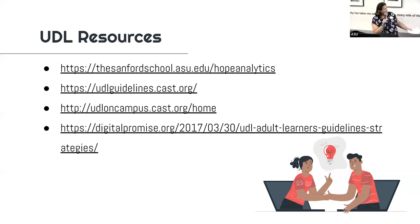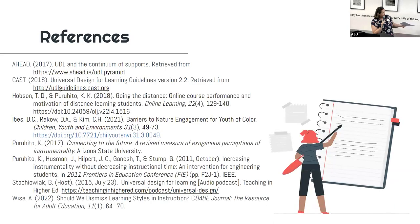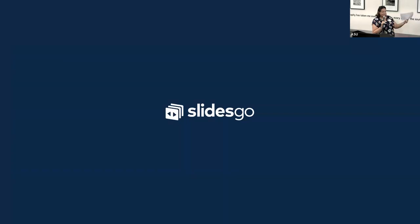Here are some resources to share: the Sanford Schools Hope Center, UDL guidelines on CAST, UDL on Campus which is specifically for college students, and Digital Promise. These should be available in the slides on the website. The next slide has references for all of the content referenced in the slides. And SlidesGo has a ton of accessible, representative content. Thank you for your time — we're going to look at questions now.